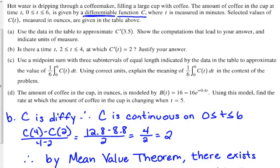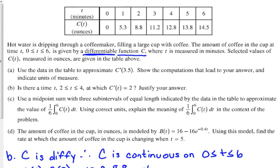Okay, part C, use a midpoint sum with three sub-intervals of equal length indicated by the data in the table to approximate the value of 1/6 times the integral from 0 to 6 of C(T) dt. Using correct units, explain the meaning in the context of the problem. So, what does that expression give us? Average value. And what is that function representing? C is what? The amount of coffee in the cup.